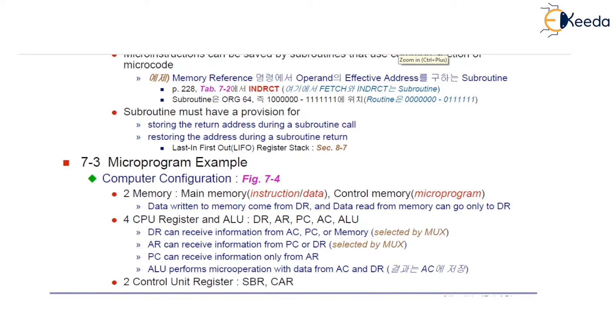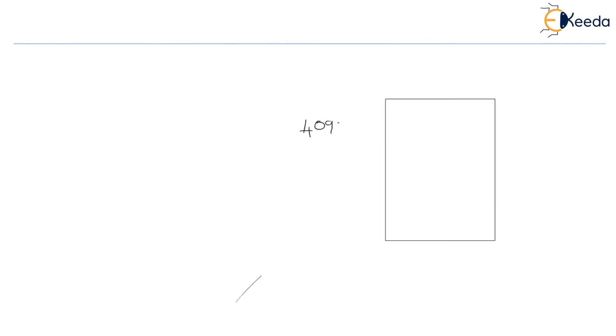Before you design the control memory or before you design the micro-programmed control unit, initially we need to understand the current computer system's configuration. What is the configuration of our computer system? We have seen the design of an actual computer system in which there is a main memory of size 4096 words, with each word size of 16 bits.